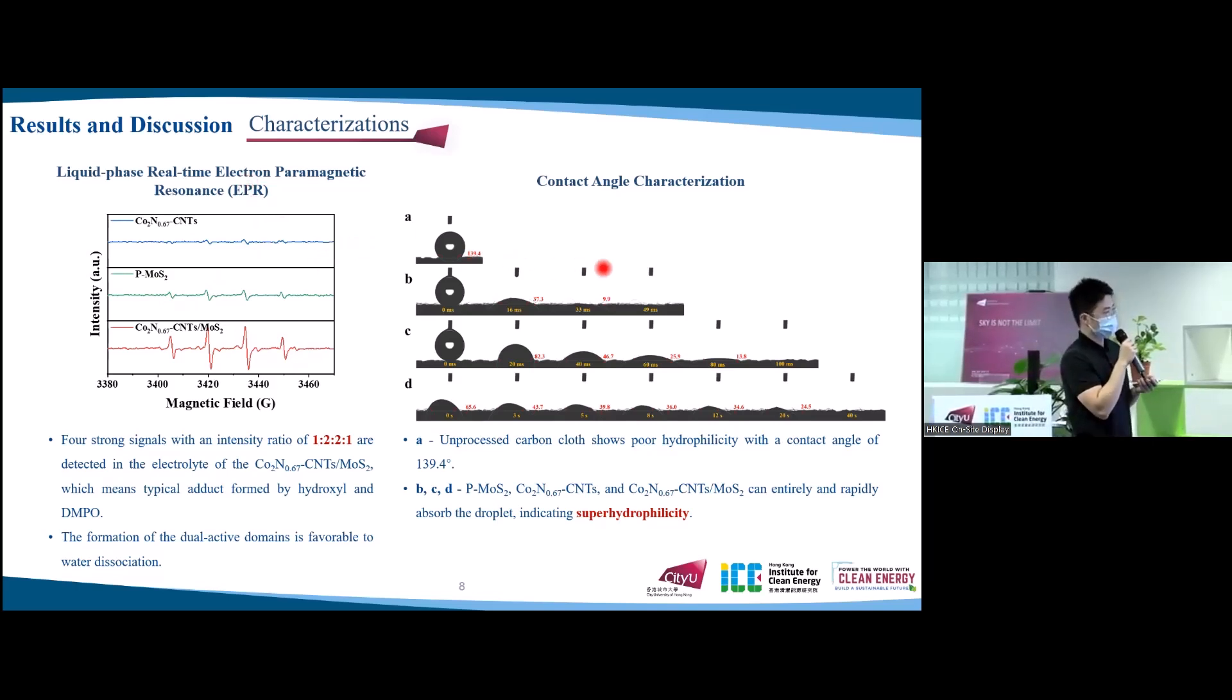The surface hydrophilicity of catalysts is also related to their HER performance because of its direct influence on mass transfer. The unprocessed carbon cloth shows poor hydrophilicity. On the contrary, pristine molybdenum disulfide, cobalt nitride-CNT and cobalt nitride-CNT at MoS2 can entirely and rapidly absorb the droplet, indicating superhydrophilicity. This is because the oxygen atoms in the polar water molecules are negatively charged and are attracted to the positively charged metal atoms in the catalysts.